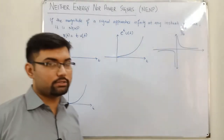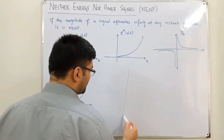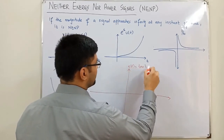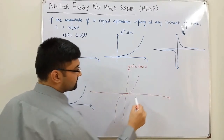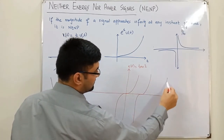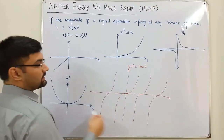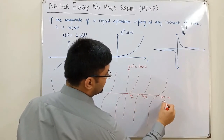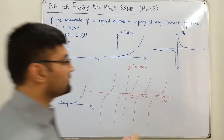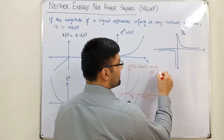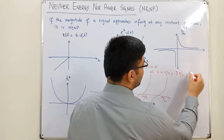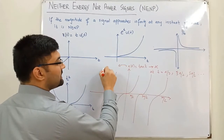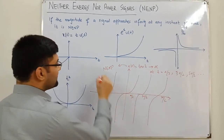There is a confusing point I forgot to mention in the previous video. Consider the function x(t) = tan(t). The graph of tangent has vertical asymptotes at π/2, 3π/2, 5π/2, and so on. The magnitude is reaching infinity at t = π/2, 3π/2, 5π/2, and so on. So tangent of t is a neither energy nor power signal.